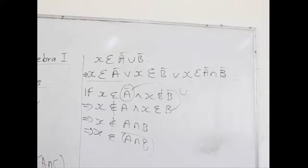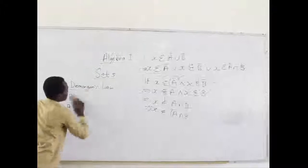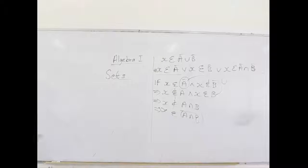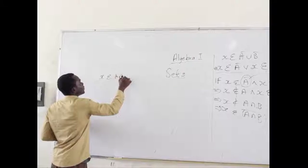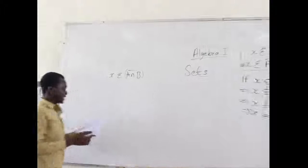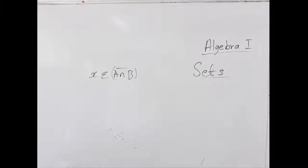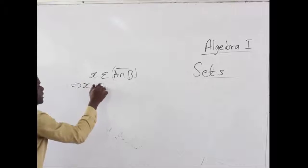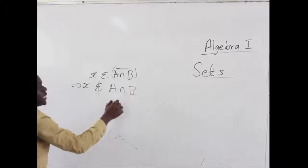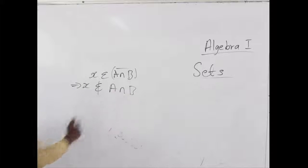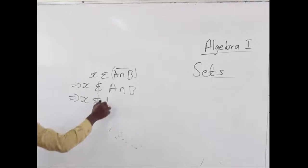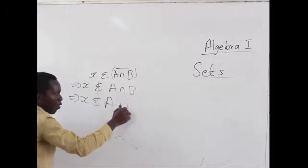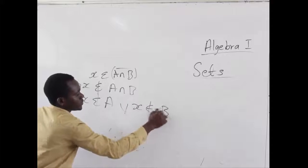Now let's try to do the opposite: when an element belongs to the right-hand side, can it be found on the left? Moving from the other side, we assume x belongs to A intersection B complement. The condition is that x does not belong to A intersection B. If it belongs to the complement, then it does not belong to the actual set. If x doesn't belong to A intersection B, it may be that x does not belong to A, or x does not belong to B.